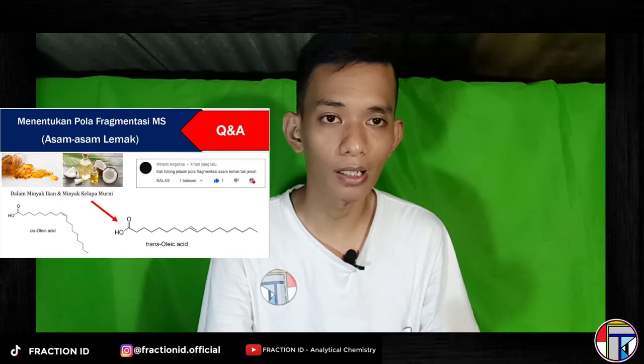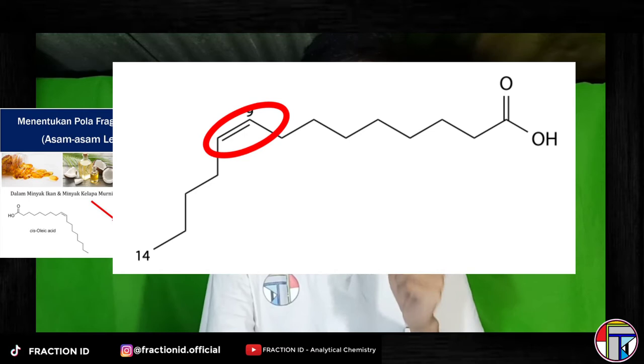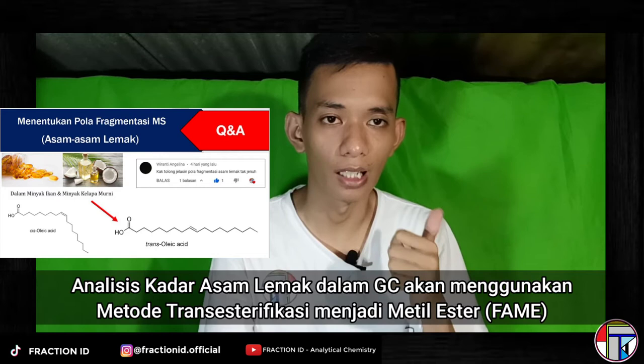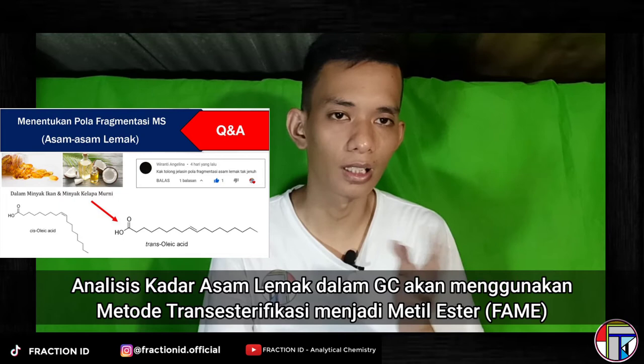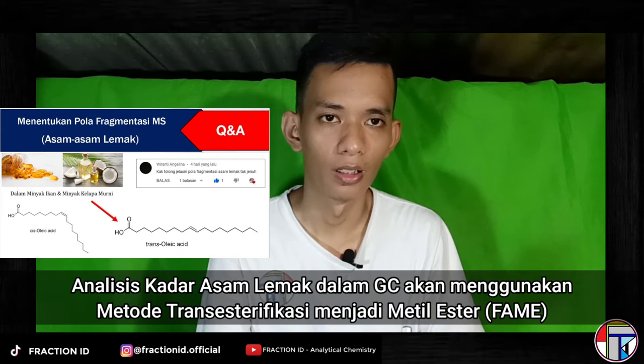Bagaimana pola fragmentasinya? Kita tahu kalau asam lemak tak jenuh itu ada gugus asam karboksilat dan gugus alkenanya karena tak jenuh. Tapi kalau menggunakan alat GC (gas kromatografi), biasanya dia akan dilakukan transesterifikasi dulu. Kenapa? Karena titik didih dari asam karboksilat ini sangat tinggi sekali, ditambah lagi bobot molekul dari asam lemak itu sangat tinggi karena banyak sekali karbonnya. Sehingga butuh transesterifikasi yang mengubah asam karboksilat menjadi ester. Titik didihnya akan menurun, jadi menguap semua ke detektor. Dan saya akan membahas pertanyaan teman-teman dalam bentuk esternya.